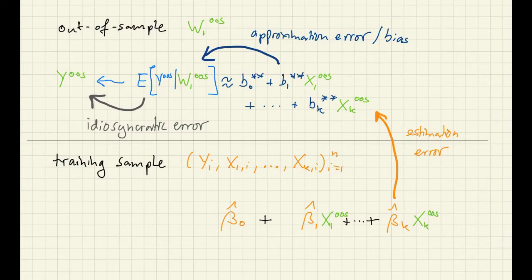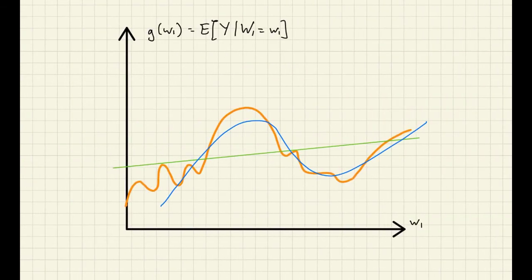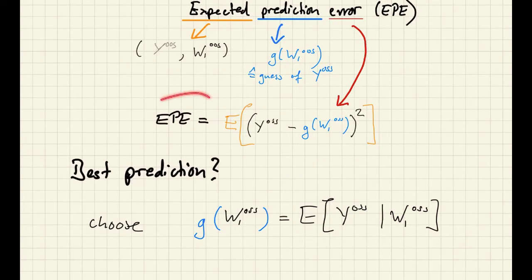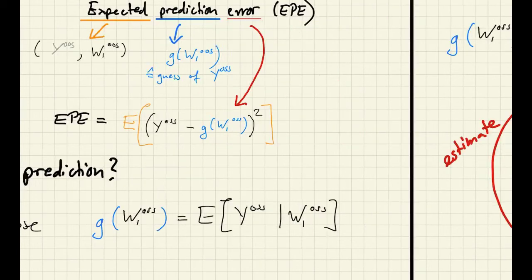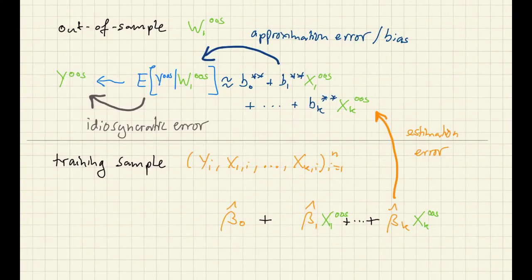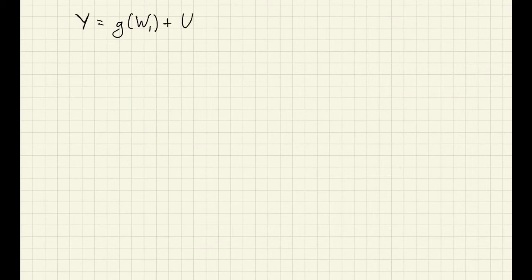Next, we are going to relate these three sources of error to the expected prediction error. And we're going to rewrite this expression into three parts. Each part will correspond to a source of error. To do that, we are going to assume something about the generative process. So we're going to assume that we can write y as the conditional expectation given w plus some error term u.